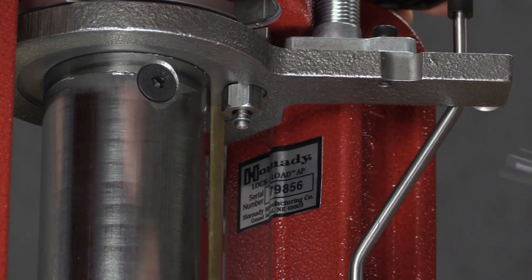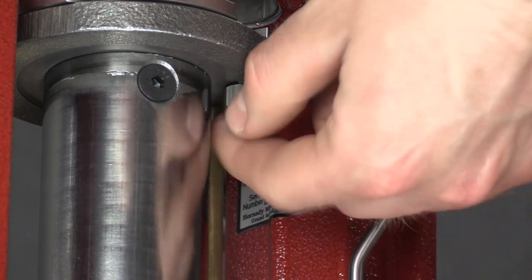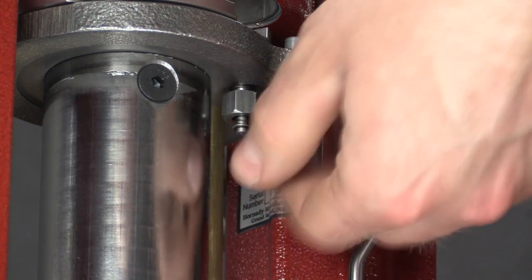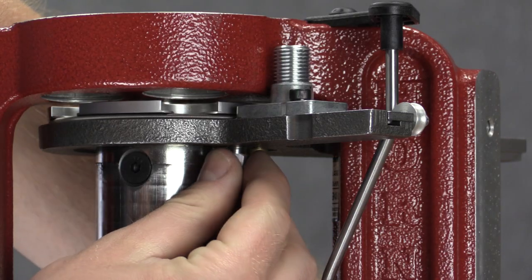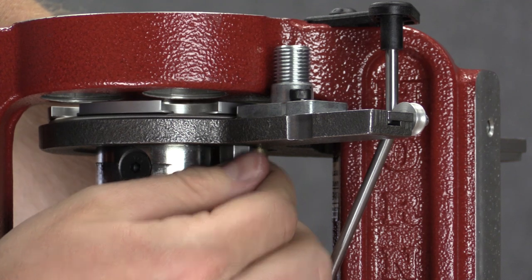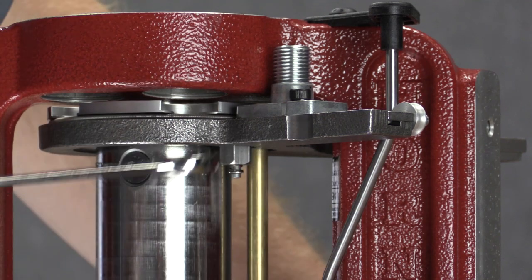Raise the ram to the top of the stroke. Use a 7-16 inch wrench to loosen the primer seater punch and unscrew it from the subplate. When installing the correct primer seater punch, tighten it snug with a wrench but do not over tighten the primer punch.